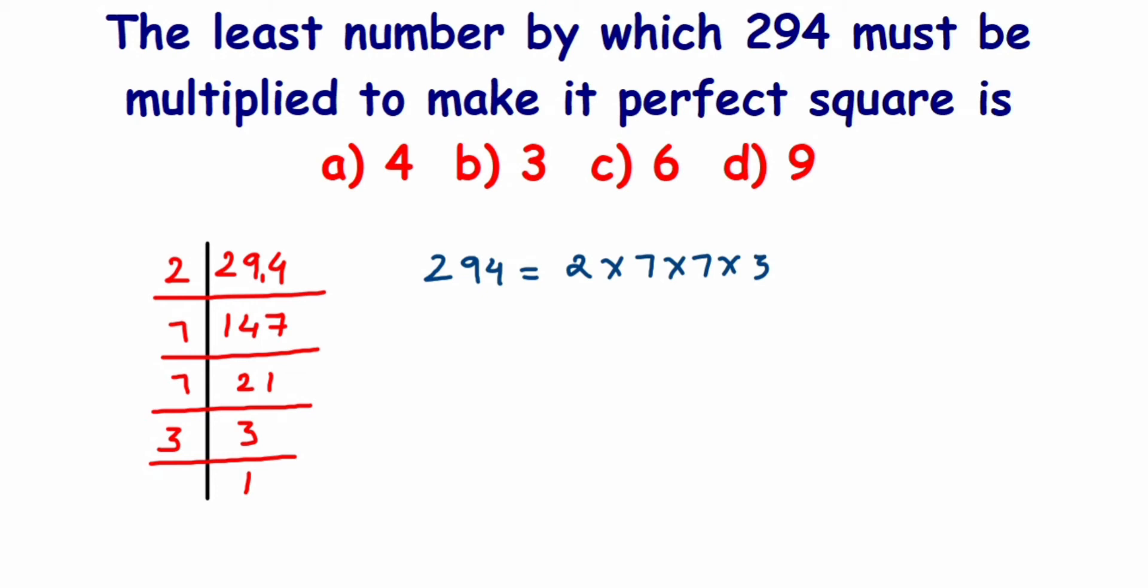We have learned that to make it a perfect square, there should be a pair of the same factor. Pairing should be available. Here 7 has one pair - we got a set of two factors.